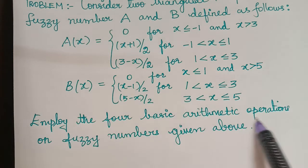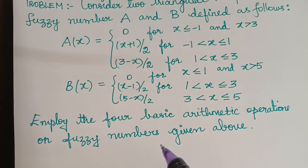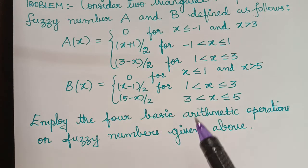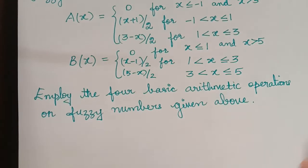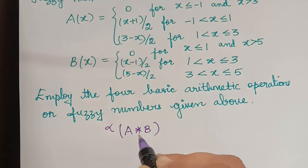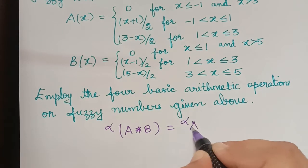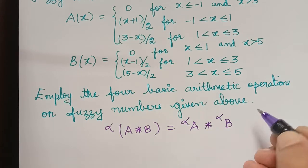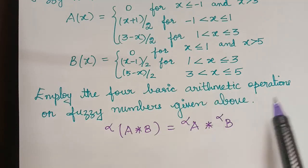The four basic arithmetic operations are addition, subtraction, multiplication, and division. By the definition seen in our previous video on arithmetic operations on fuzzy numbers, arithmetic operations on fuzzy numbers are defined by the alpha cut: alpha cut of A★B equals alpha cut of A ★ alpha cut of B, where ★ represents any of the four basic arithmetic operations.